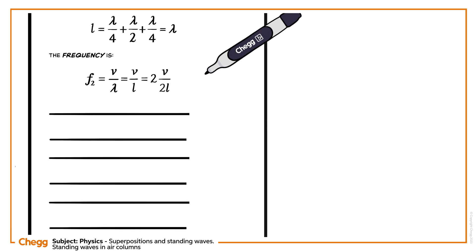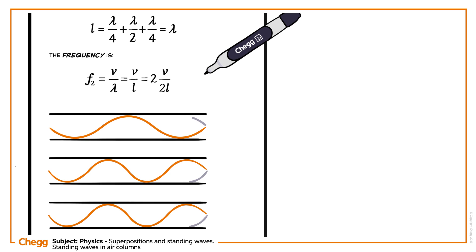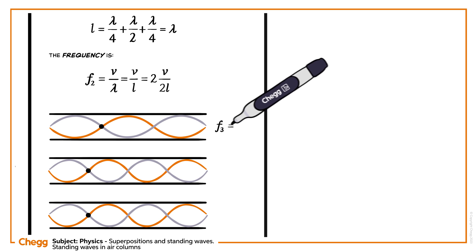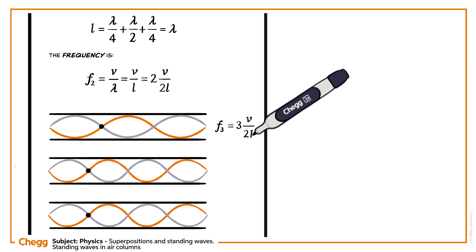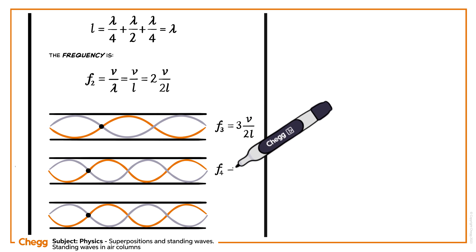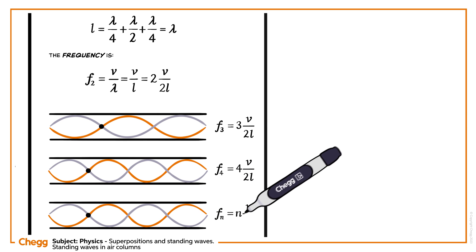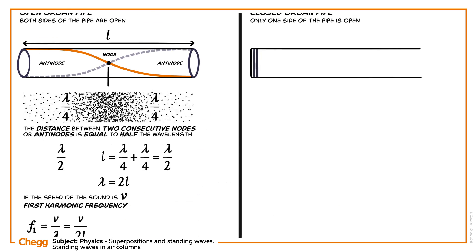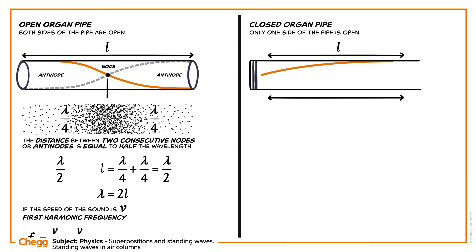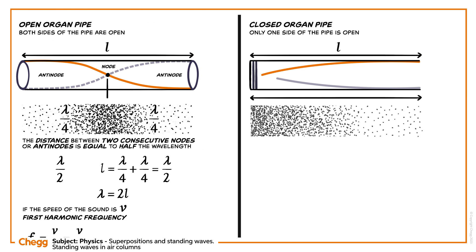Similarly, the third, fourth, and nth harmonic frequencies are: f3 equals 3v divided by 2l, f4 equals 4v divided by 2l, and fn equals nv divided by 2l. Now let's learn how the harmonics are observed in the closed pipe.